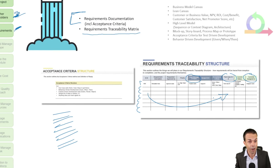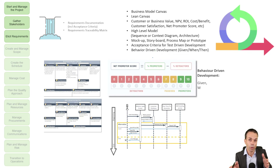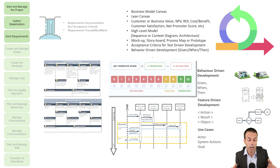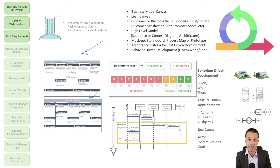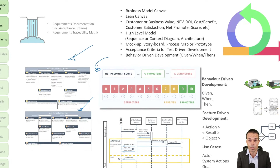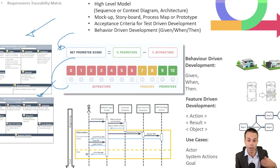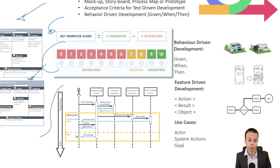With Agile, there are more things we can do to elicit requirements. Agile is more focused on people and customer requirements — meeting the needs of our customers. We can use the business model canvas or lean canvas to come up with new feature ideas to make sure they're meeting customer needs. We can also use things like the Net Promoter Score for customer satisfaction — are our customers satisfied, are they giving us feedback, can we take that feedback and turn it into requirements for improvements? We can also start with the high-level model or architecture diagram of where we're trying to go with our system.